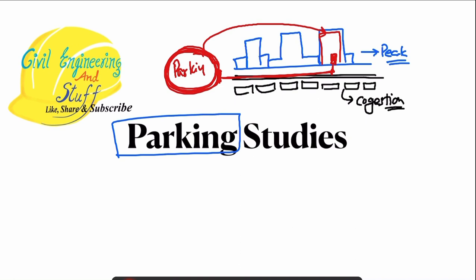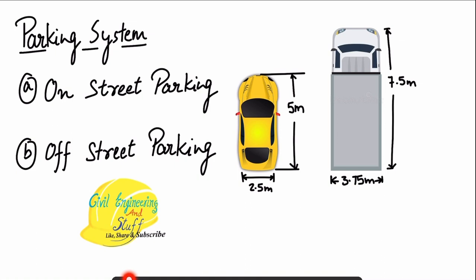The discussion will be with respect to the standard vehicle, that is the car. So whenever we discuss the topics now, the discussion will be for a standard vehicle of length 5 meters and width 2.5 meters. In case a special parking facility is to be designed for commercial heavy vehicles, the length taken is 7.5 meters and the width is 3.75 meters. This will be specified if that special case is required; otherwise the standard passenger car — length 5 m, width 2.5 m — is used.